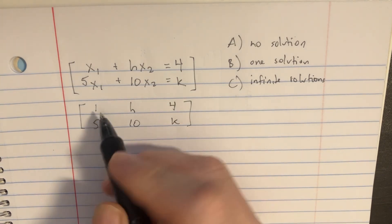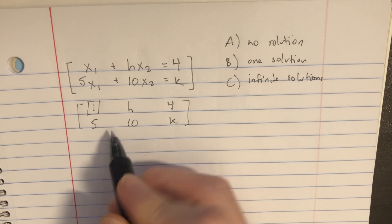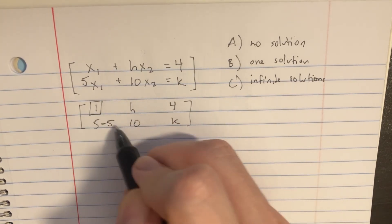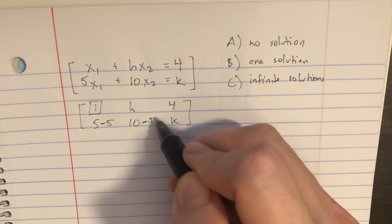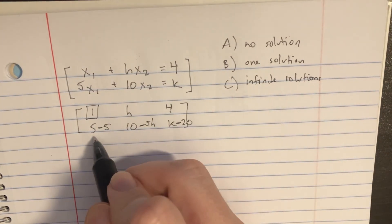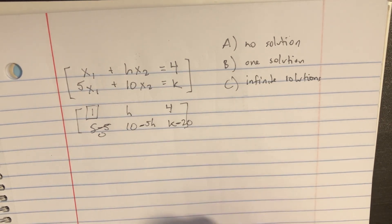So we naturally have to put this in echelon form. We already have one pivot right here. So let's go ahead and subtract 5 from here by multiplying this row by 5. And then we'll do the same thing here, minus 5h, and over here we get minus 20. And from there, this would just turn out to be a 0 over here.